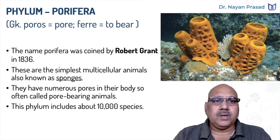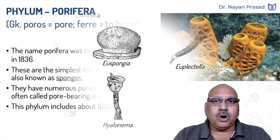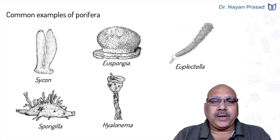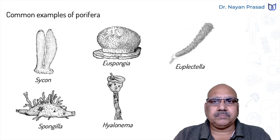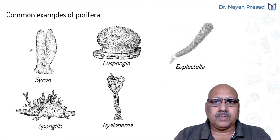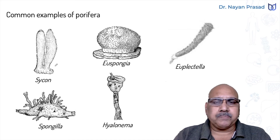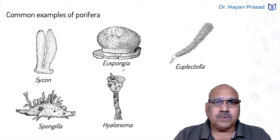The common examples of Phylum Porifera include Sycon. Sycon is also called urn-sponge. It has a vase-shaped body. Another example is Euspongia, or the bath-sponge.